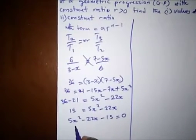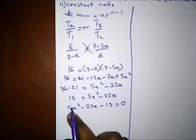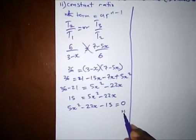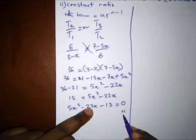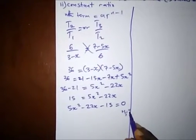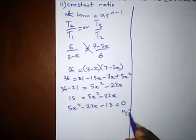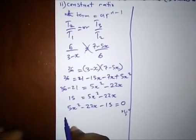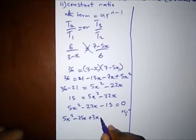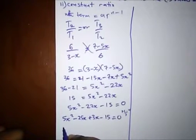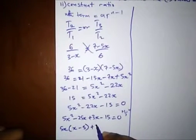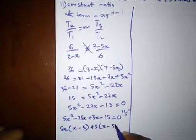To factorize this, we multiply 5 by 15 to get 75. We need multiples of 75 that add or subtract to give minus 22: that's minus 25 plus 3. So we have 5x squared minus 25x plus 3x minus 15 equals 0. Taking like terms: 5x(x minus 5) plus 3(x minus 5) equals 0.